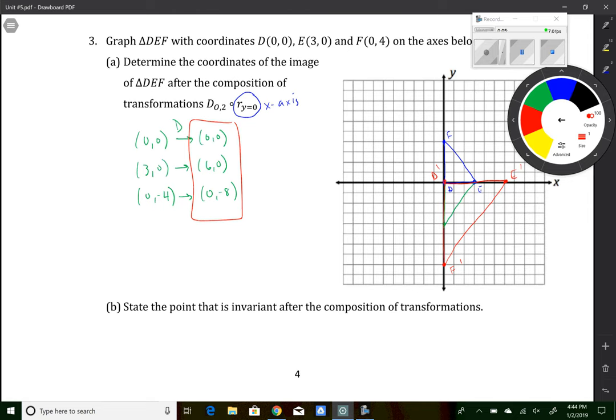Point B says, state the point that is invariant after the composition of transformations. The only point that remained the same in all of the transformation work that we did was point D. So D is invariant. That's what invariant means, stays in the same spot. Also notice when we did the composition, we worked backwards. That was something we did back in unit number three when we talked about rigid motions.